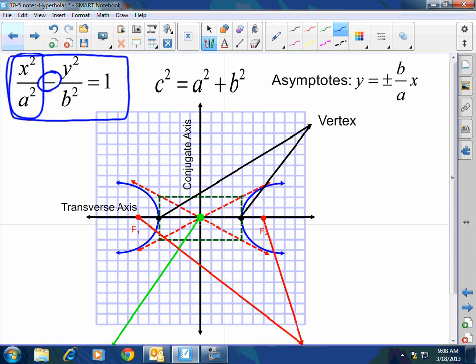Now, there's two types of axes here. You have a transverse axis, and the transverse axis is the axis, or it's kind of like the major axis. The transverse axis is the axis upon which the vertices lie. The other axis is the axis through which the center lies, and that is called a conjugate axis.